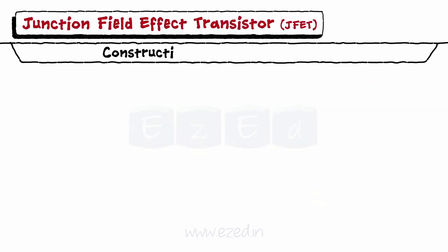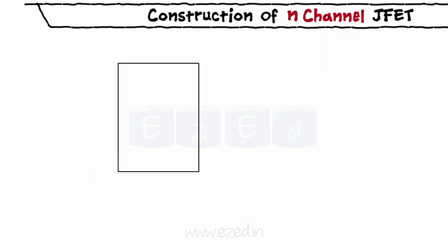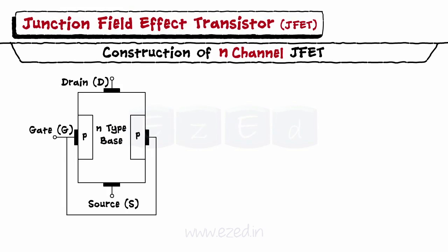Let's start with the construction of N-channel JFET. The name N-channel signifies that here electrons are the majority charge carriers. To form the N-channel JFET, we take an N-type semiconductor as the base and dope it with P-type semiconductor at both ends. Both these P-regions are electrically connected to each other, and an ohmic contact is taken out, which is called the gate. Two more terminals are taken out from the N-substrate and are called source and drain. Thus, a JFET has three terminals: source, drain, and gate.